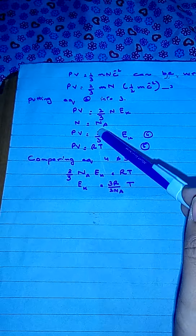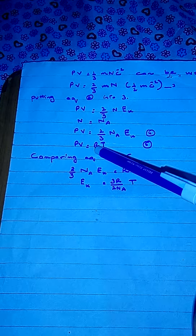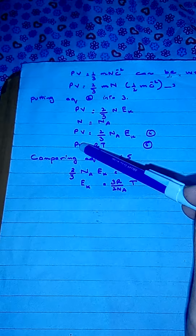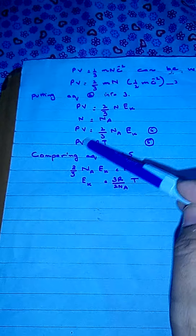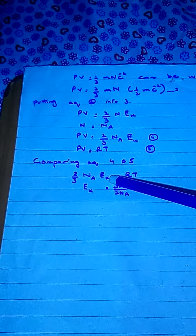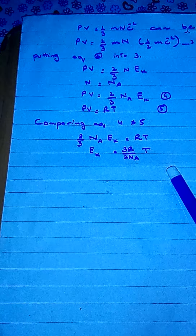Substituting N = NA, we get PV = (2/3)NA·Ek. Since PV = RT for one mole, comparing both equations gives (2/3)NA·Ek = RT. Solving for kinetic energy: Ek = 3RT/(2NA). This shows a direct relationship between kinetic energy and temperature — when the temperature of gas molecules increases, their kinetic energy also increases.